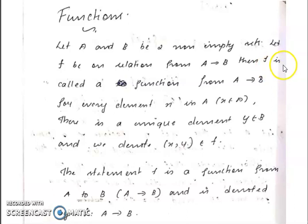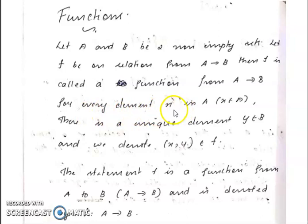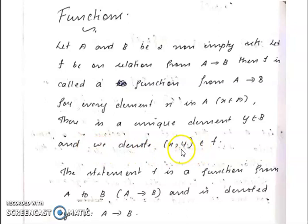Then F is called a function from A to B if for every element X in A — symbolically, X element of A — there is a unique element Y belonging to B, and we denote (X, Y) as an element of F.